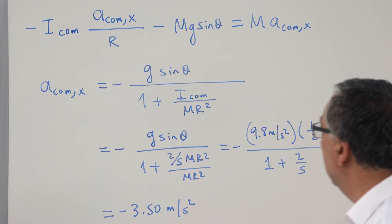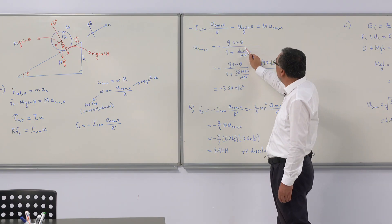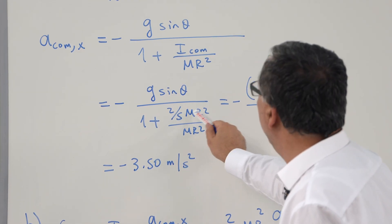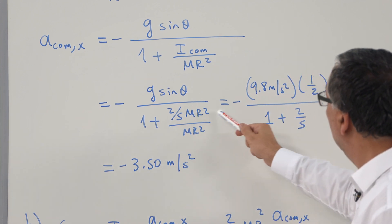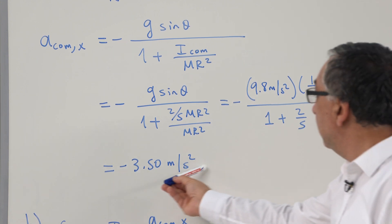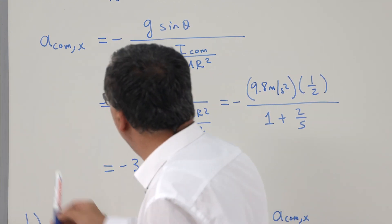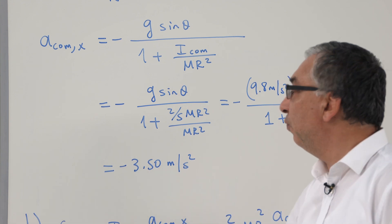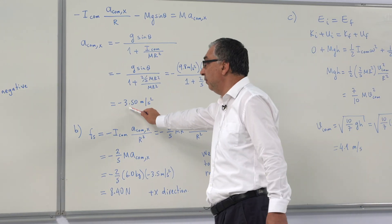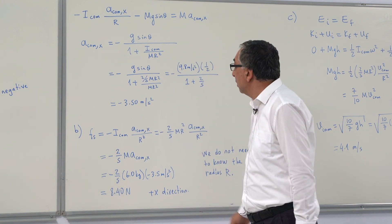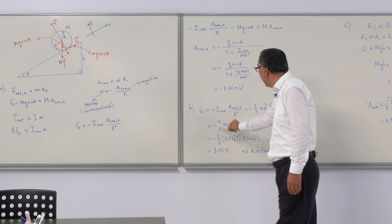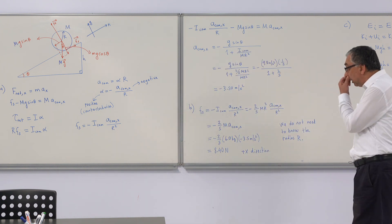The rotational inertia of a uniform ball is (2/5)mr². Inserting this, we obtain the acceleration in the x-direction as minus 3.5 meters per second squared. It is negative, confirming it accelerates down the ramp. From this, we can then find the static frictional force.